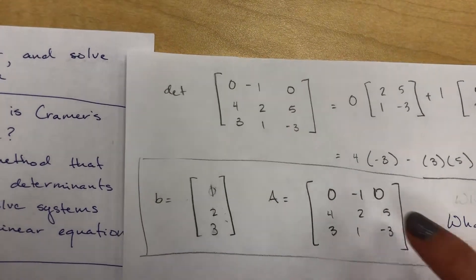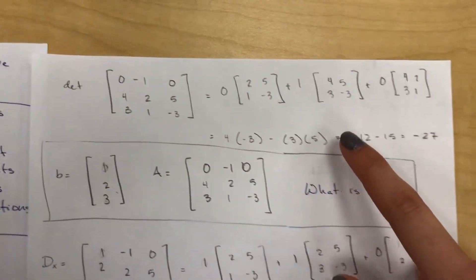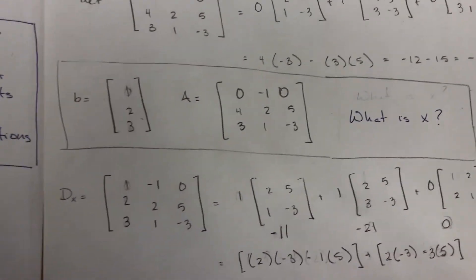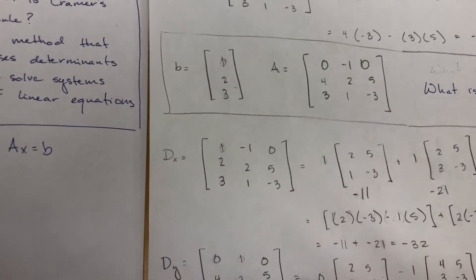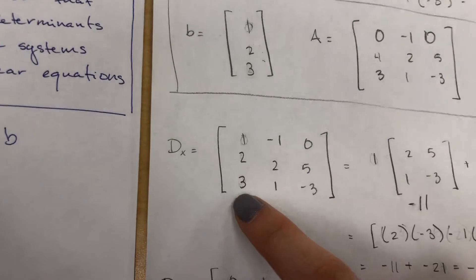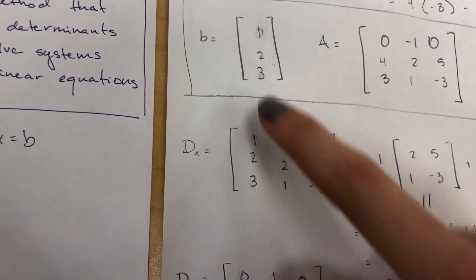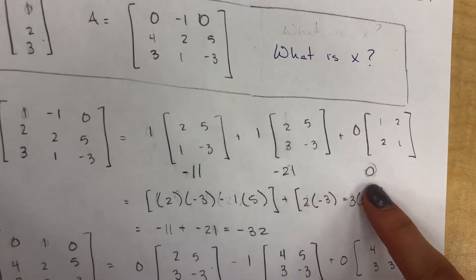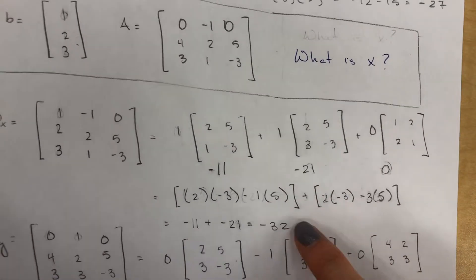Then you want to also find the determinants for X, Y, and Z. To do that you replace the X vector with B and then solve for the determinant using row expansion to get the determinant of DX.